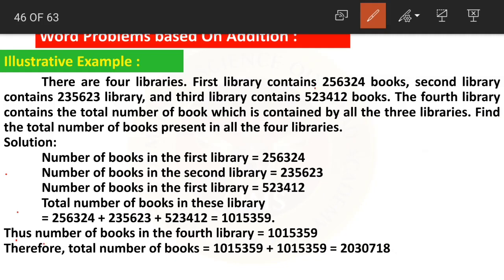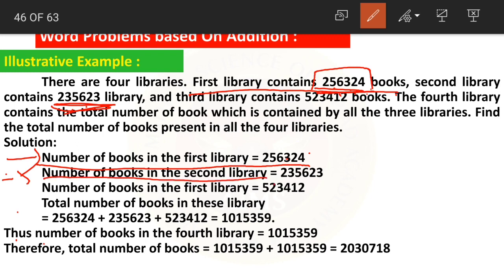Now we need to write the steps. The first number is 2 lakhs 56,324 — these are books in the first library. The number of books in the second library is 2 lakhs 35,623. The number of books in the third library is 5 lakhs 23,412.